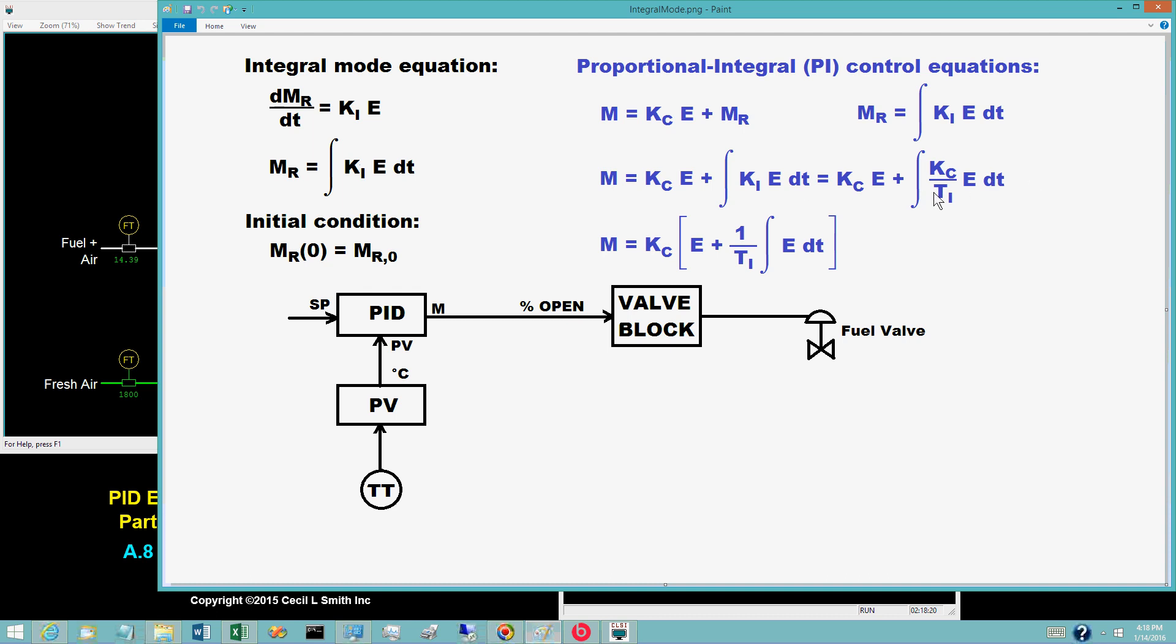Also in common use is its reciprocal, the reset rate R sub I. Rewriting the control equation in terms of the reset time T sub I gives an equation with the controller gain K sub C in both the proportional term and the integral term.